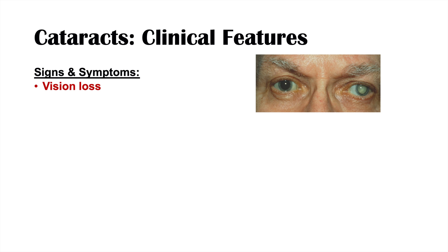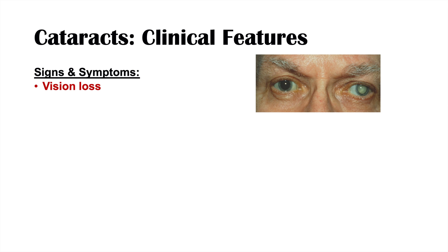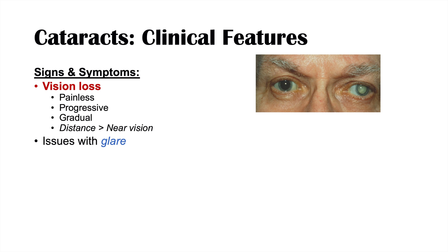The clinical features of cataracts include vision loss — since the normally clear lens becomes clouded, light cannot travel through it properly, causing reduced visual acuity in the affected eye. This vision loss is painless, progressive, and gradual. Cataracts affect distance vision more than near vision, so individuals will lose their farsight before their near vision. Patients also experience glare, with descriptions of starburst patterns or halos, especially when driving at night with oncoming headlights.